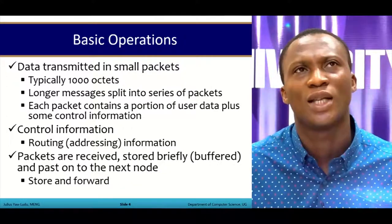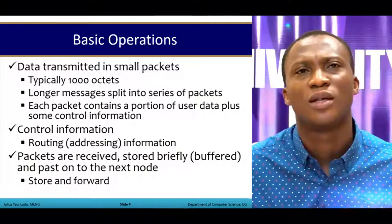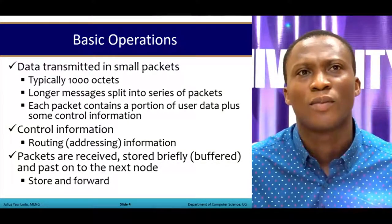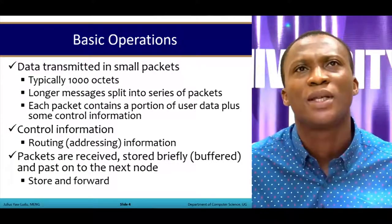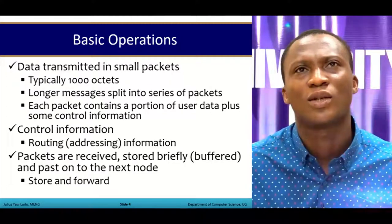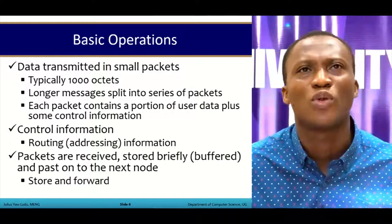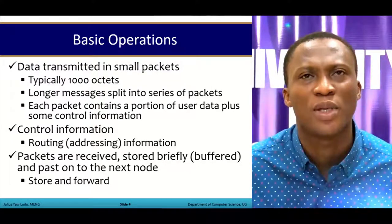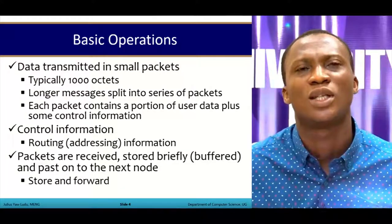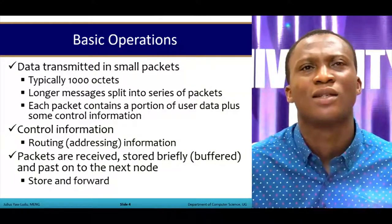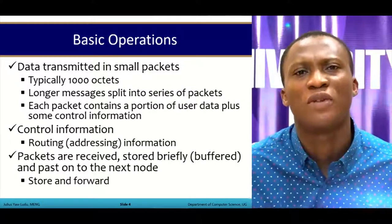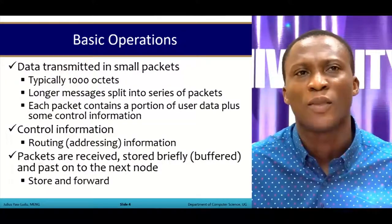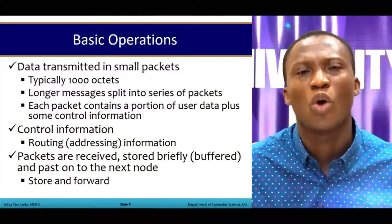Hence, we have the packet switching network. With packet switching, data is transmitted in small packets, typically 1,000 octets — an octet being 8 bits. Longer messages are split into a series of packets, and each packet contains a portion of user data plus control information such as routing addresses: source IP, destination IP, flags, and so on. Packets are received, stored briefly in buffers, and passed on to the next node — this is the principle of store-and-forward, typically found in routers or routing devices.